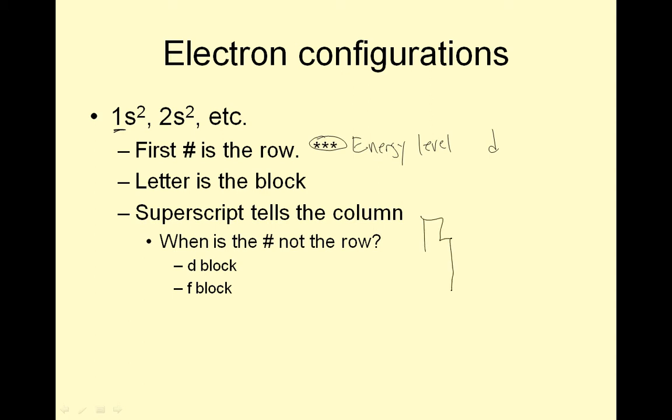So here is the periodic table. This is the S block. This over here is the P block. This is the D block, and this down here is the F block. This is also S. There are rows 1, 2, 3, 4, 5, 6, 7 that go through this. The letter is the block. The superscript tells you what column it is. So this would be S1, this would be S2, this would be P1, P2, all the way over here which is P6.